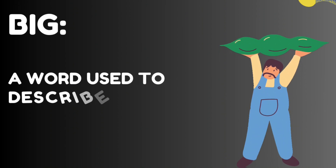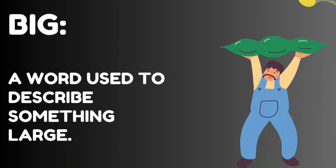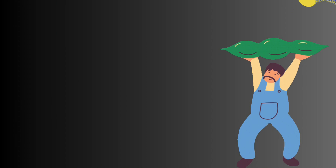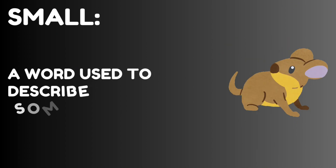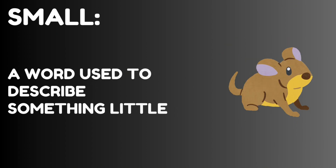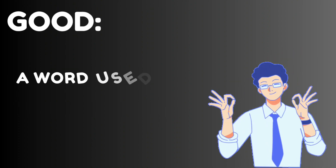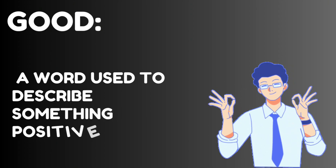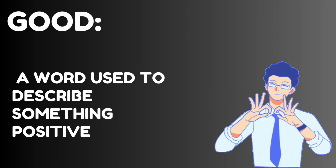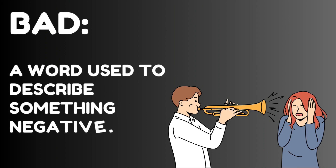Big — a word used to describe something large. Small — a word used to describe something little. Good — a word used to describe something positive. Bad — a word used to describe something negative.